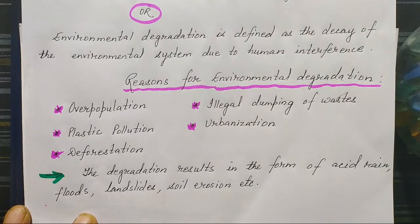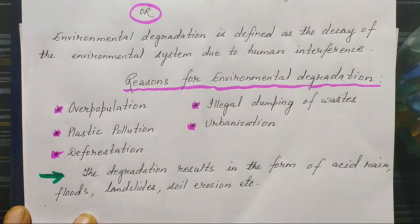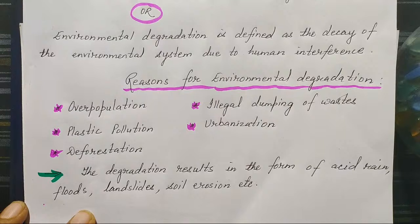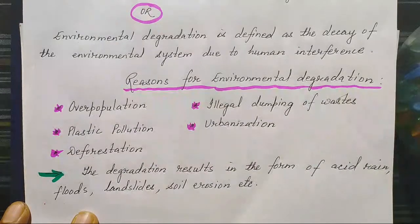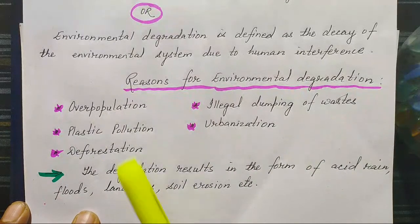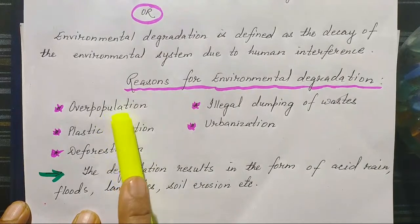What will happen if the population keeps growing? Overpopulation will result in a lot of competition for everything, scarcity of food and water, and we will not get land to live. Over population means use of a lot of things which will result in pollution, and it also leads to deforestation. All types of pollution will be caused due to overpopulation.